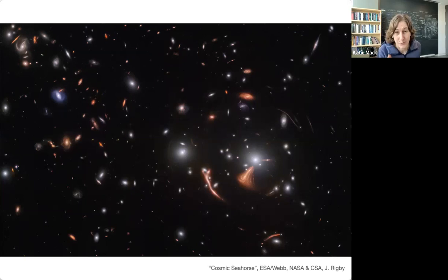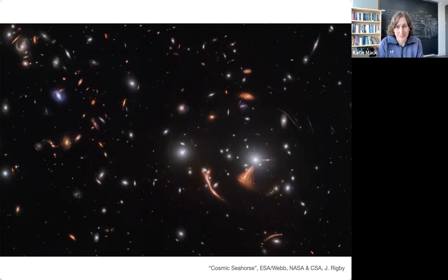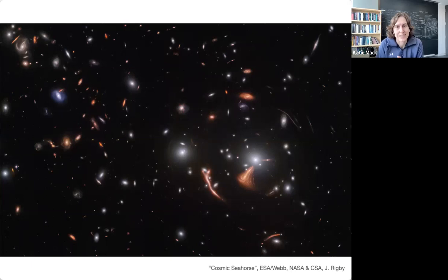One of the cool things about JWST is that it has better resolution than the Hubble Space Telescope, so it can see more detail. It can also see farther because it can see into the infrared part of the spectrum, which means it's looking at galaxies whose light has been stretched very much by the expansion of the universe — stretched out to longer wavelengths, into infrared or even farther into that part of the spectrum. JWST can see really distinct galaxies and it just has a lot better resolution than Hubble, so it can see a lot of detail.